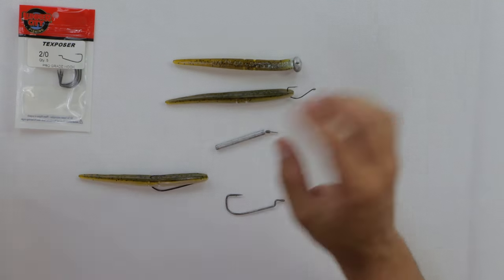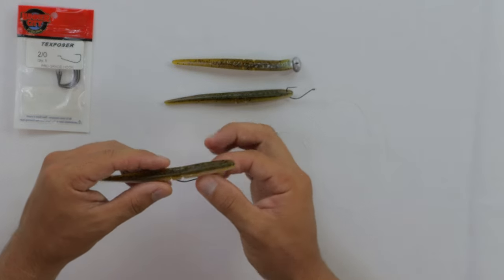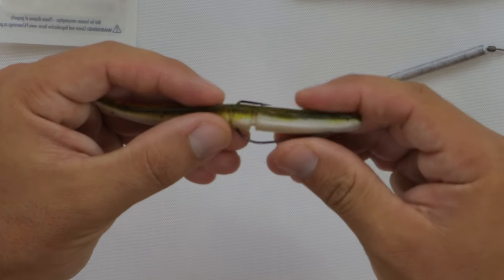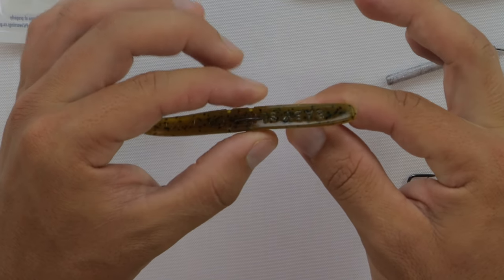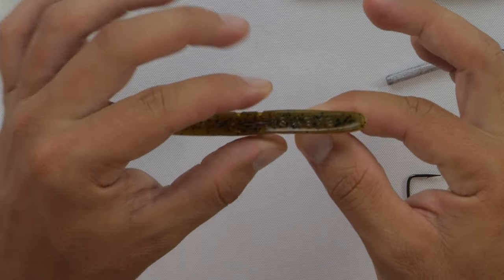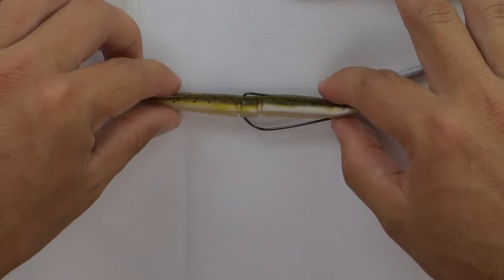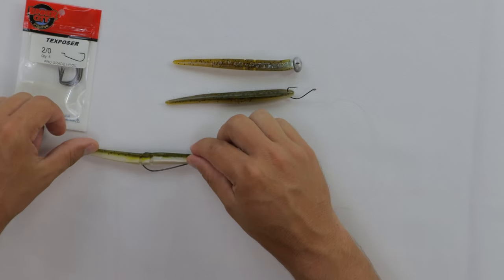And that's what's going to give you a nice, straight rig. And then you can also, if you want to, take the hook point right there. You can take that hook point, and you can actually pull the plastic forward and push that hook point into the body a little bit.